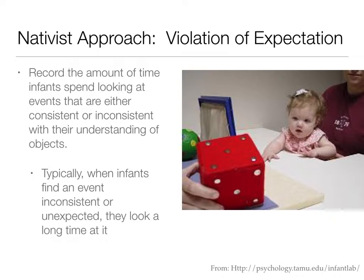Piaget was asking verbal and motor tasks, which are much more complicated. Infants have pretty good control over their looking behavior when they're born, and adult-like visual acuity by about six months. This violation of expectation task was developed by Renée Baillargeon, and it showed object permanence happening much, much earlier than Piaget thought — about a year earlier. This really sparked a new perspective on cognitive development and gave rise to the nativist approach.